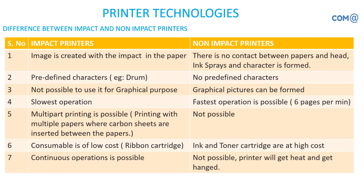Impact printers are slowest in operation because they print character by character, giving very slow output. The advantage is that they can run for a long time without getting stuck. Multiple printing is possible — since it is an impact printer, I can place two or three carbon papers behind the sheet and take multiple copies at once. Normally in bill payment or transactions where you need evidence, one copy is yours and another is the customer's copy. The consumable — ribbon cartridge — is of low cost.